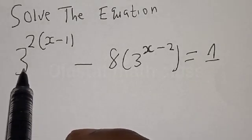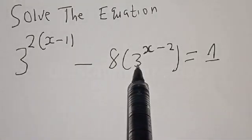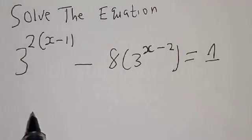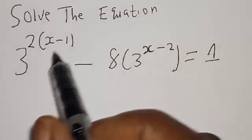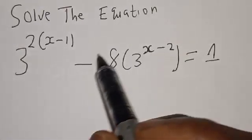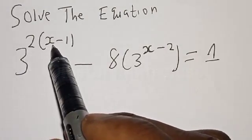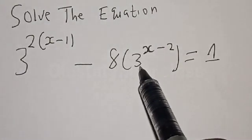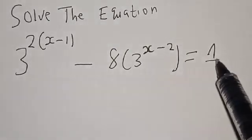Solve the equation: 3 raised to power 2(x minus 1) minus 8 multiplied by 3 raised to power (x minus 2) is equal to 1.